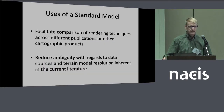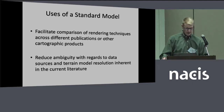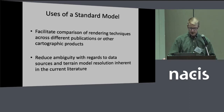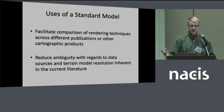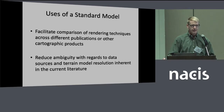We think some of the places a standard model could help is in facilitating comparison between rendered techniques across publications or other cartographic products. Also, sometimes we're just ambiguous or don't explain what our data source is. In our inventory of articles, it's not always apparent where the data is coming from, and a standard model could make that clearer.